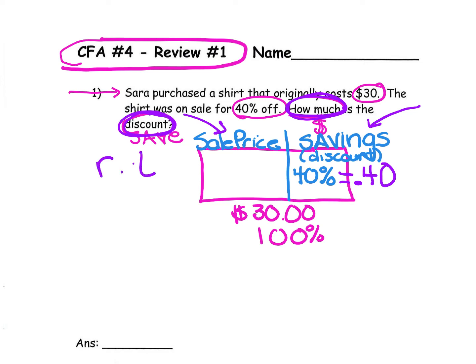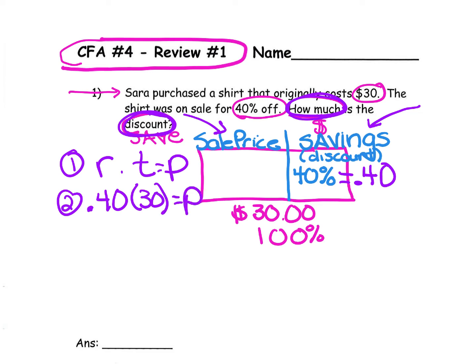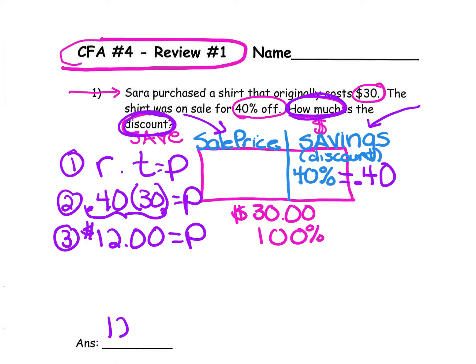R times T equals P. 0.40 times $30 equals P. As we multiply, we see that we save $12. The answer to this question is $12.